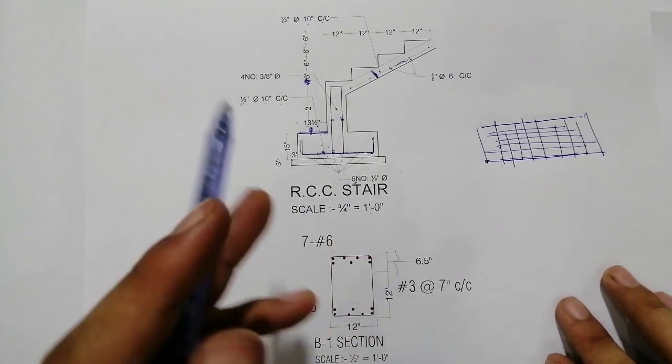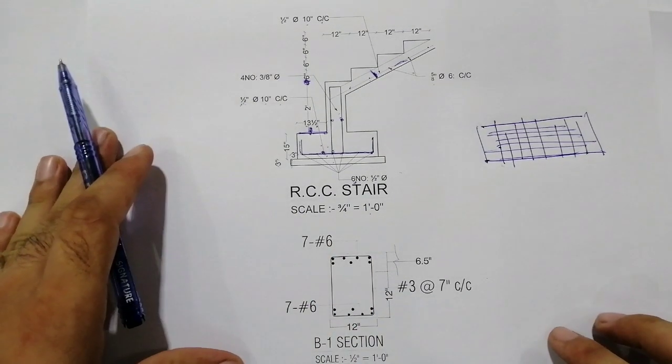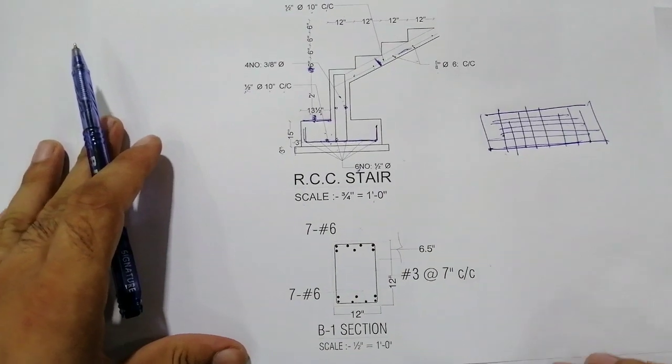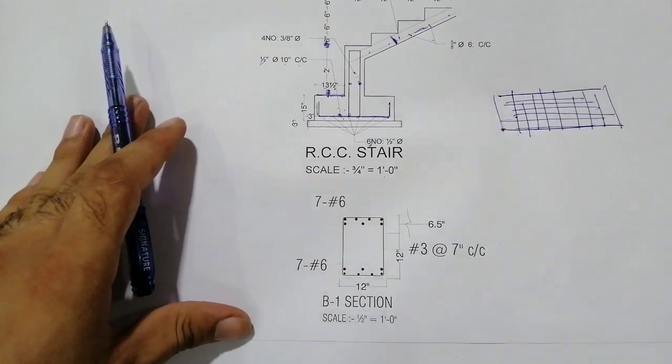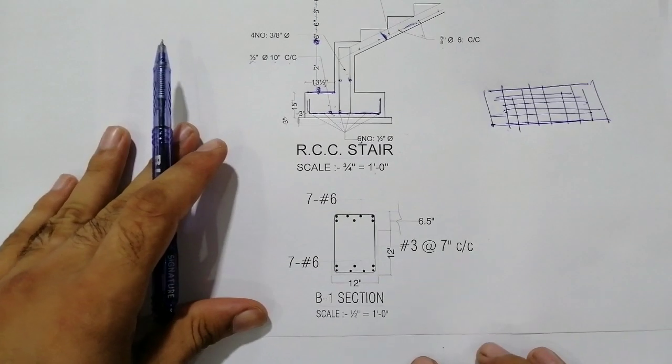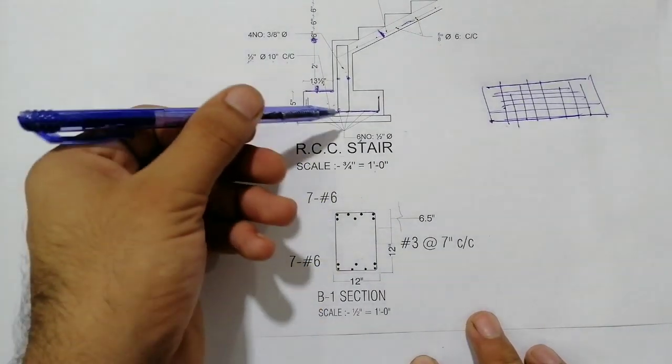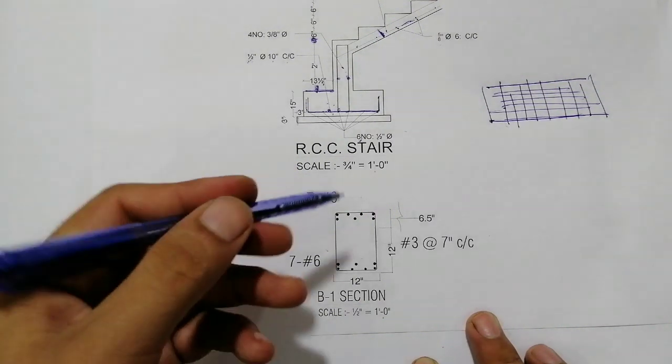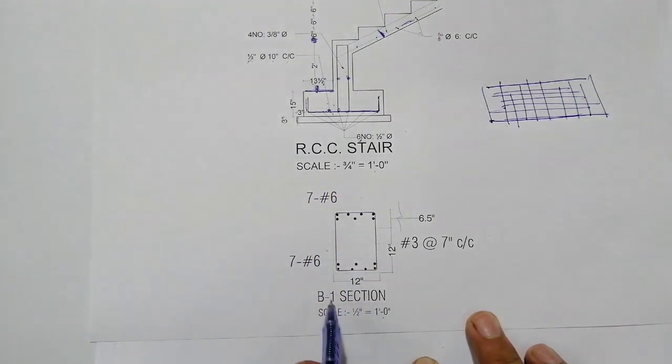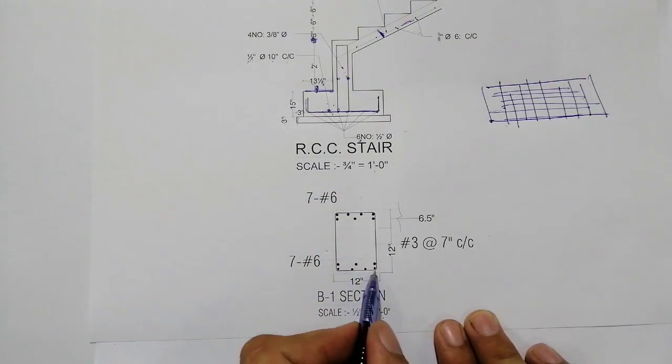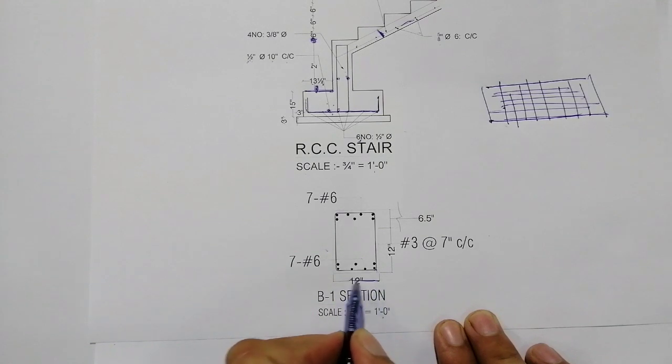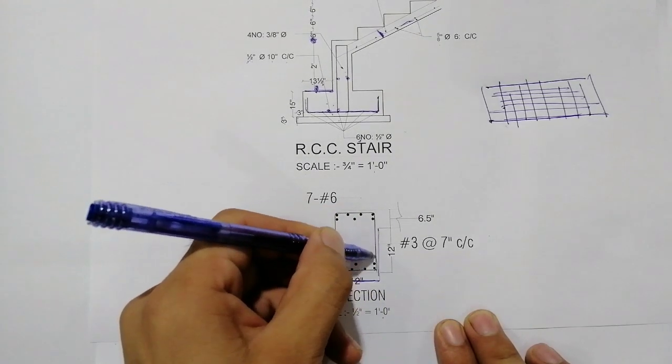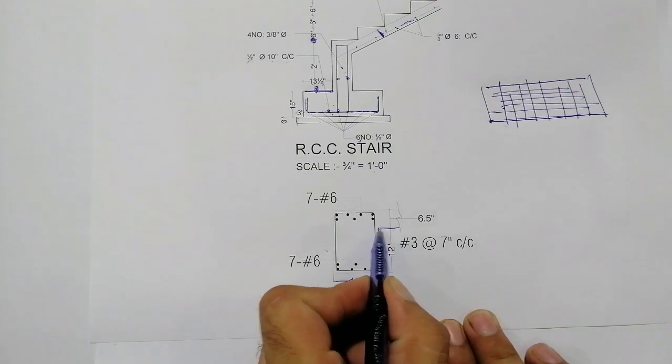Now come to its cross section - the B-1 section. The scale is half inch equals one foot. As you can see, its width is 12 feet on this side, and this is also 12 feet. Here you can see its thickness.